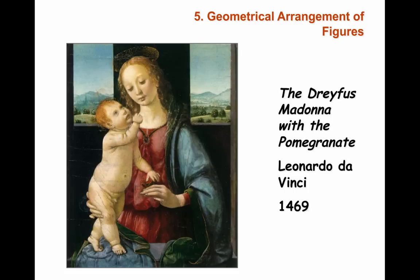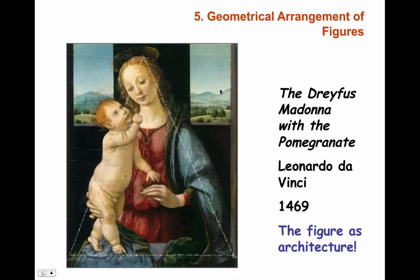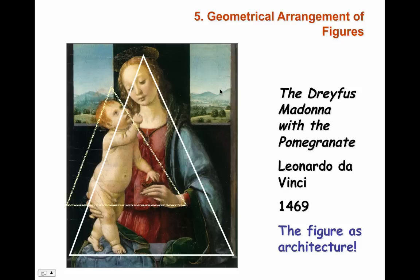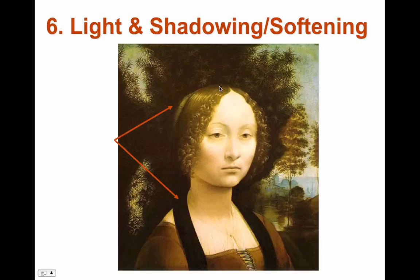The geometrical arrangement of figures — notice the background. You get a triangle within a triangle. You get the light and the shadow softening. You see examples here.